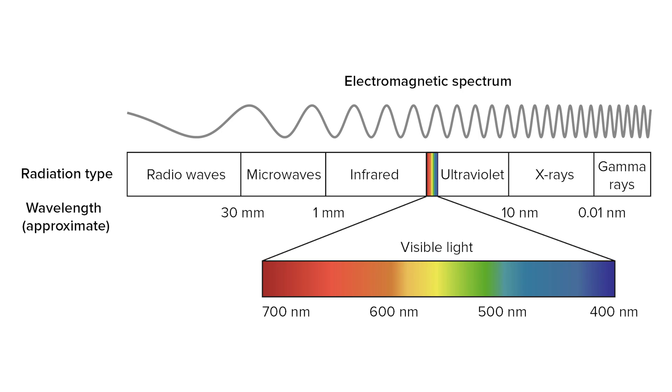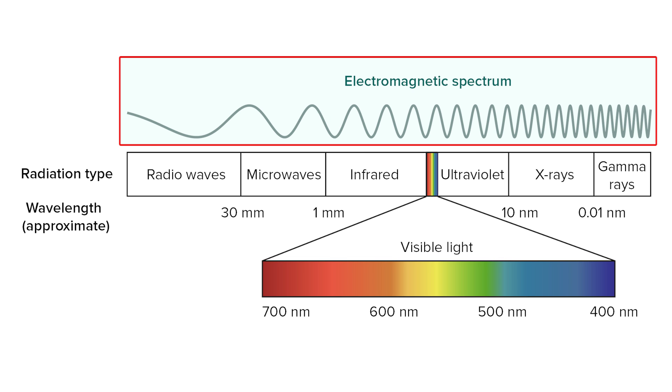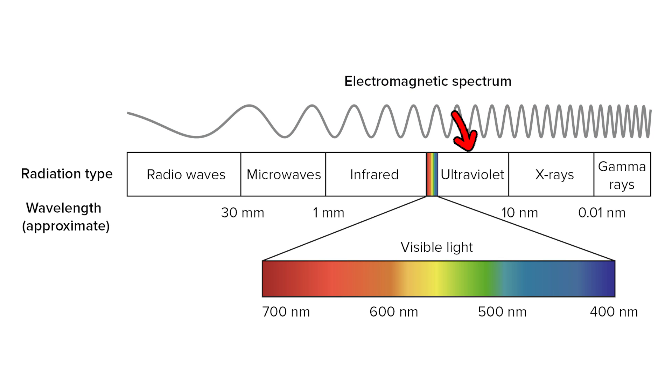Remember this chart from the first video? The visible light spectrum actually sits in the middle of the electromagnetic spectrum, right next to UV rays and X-rays that give you cancer, and gamma rays which turn you into the Incredible Hulk. So we're actually irradiating ourselves and the plants in our aquariums — but it's okay, it's harmless radiation.